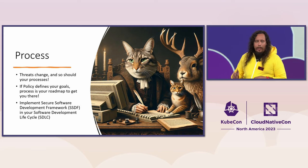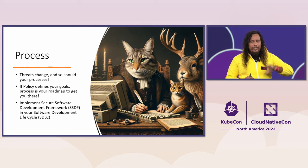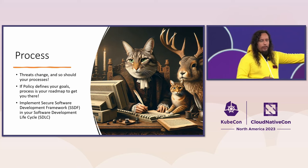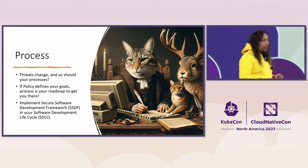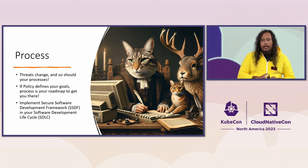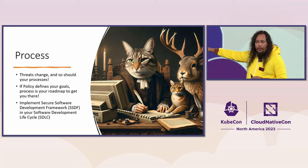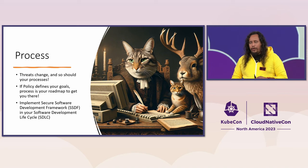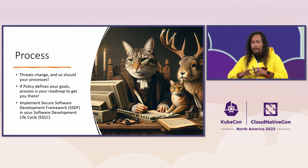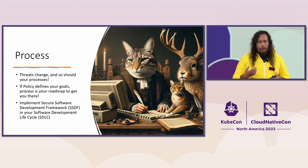Then we have process. As the threats change, so should your processes. A process is the various things you do in order to meet your goal — if your policy defines your goal, your process is your roadmap on how you get there. There are some really amazing documents I highly recommend. The one most people will point you towards is the Secure Software Development Framework published by NIST, which describes what things you should put inside of an SDLC. There is definitely discussion as to whether it goes far enough, but before you ask those questions, go read the document, make a decision, and understand what they're trying to talk about.